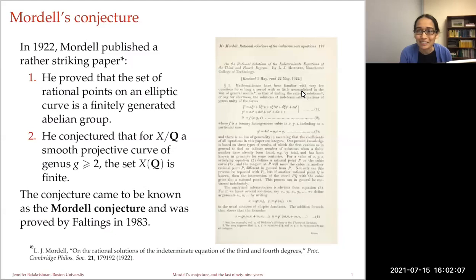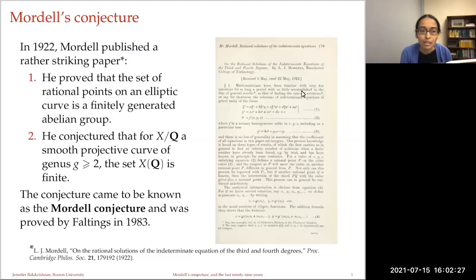In 1922 Mordell published a very interesting paper where a number of things happened. In this paper he not only proved that the set of rational points on an elliptic curve is a finitely generated abelian group — Mordell's theorem — but he also conjectured that for a smooth projective curve over the rationals of genus two or more, the set of rational points is finite. This conjecture came to be known as the Mordell conjecture and was proved by Faltings about 60 years later.